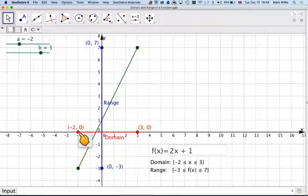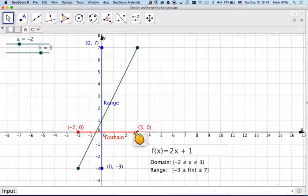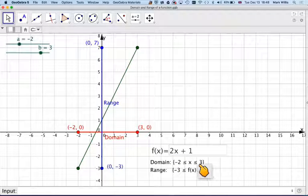So the domain of this particular function, 2x plus 1 with a restricted domain, is from minus 2 to, sorry, to 3. Minus 2 to 3.